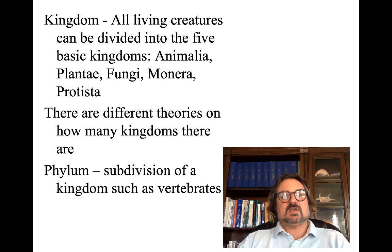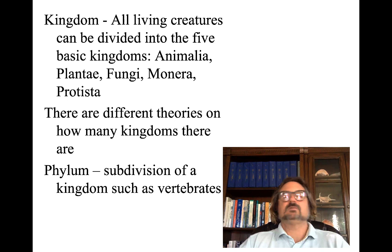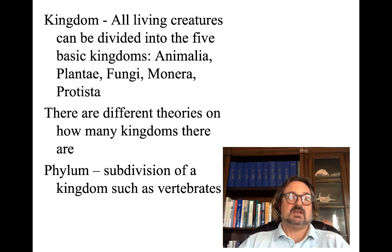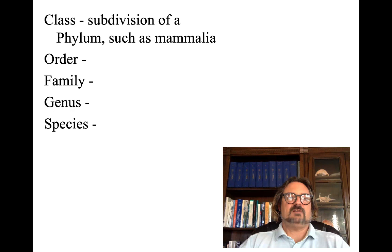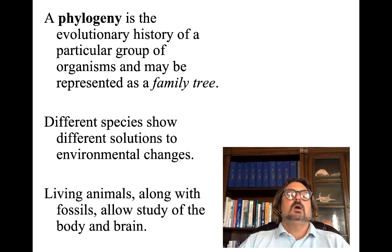Kingdom is the highest level, and all living creatures can be divided into five basic kingdoms: Animalia, Plantae, Fungi, Monera, and Protista — though there is some debate on the exact number. A phylum is a subdivision of a kingdom; for Animalia, that would be vertebrates. Class is a subdivision of a phylum, such as Mammalia. Subdivisions continue through order, family, and then back to genus and species.